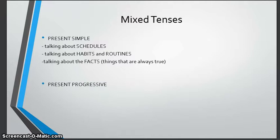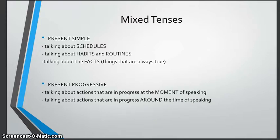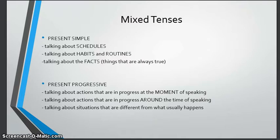Then we have present progressive. We use this to talk about things that are happening at the moment of speaking — like right now I am teaching. We use it to talk about actions in progress around the time of speaking, like 'I am reading a book.' We also use it for situations different from what usually happens, like 'I usually ride my bike but today I am walking.'